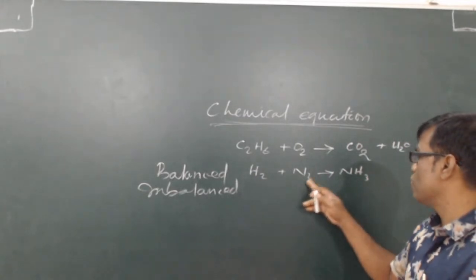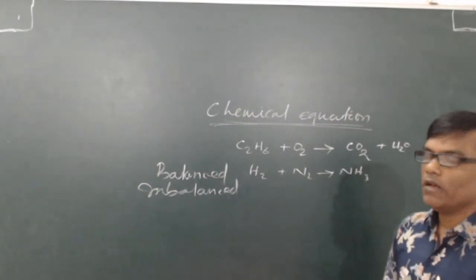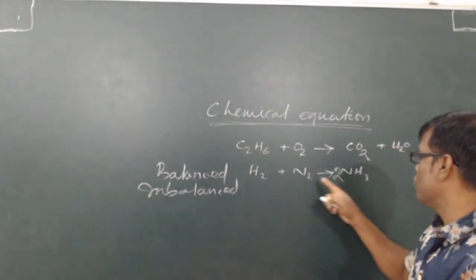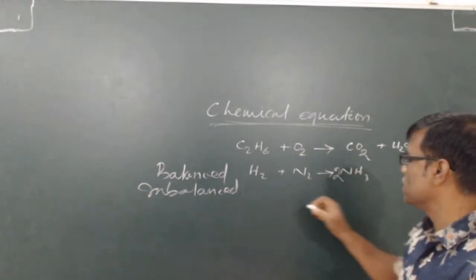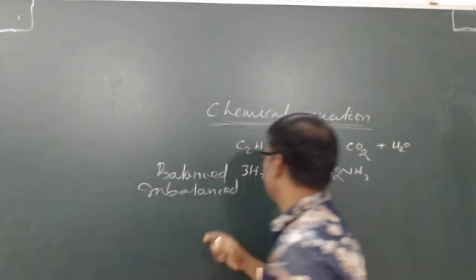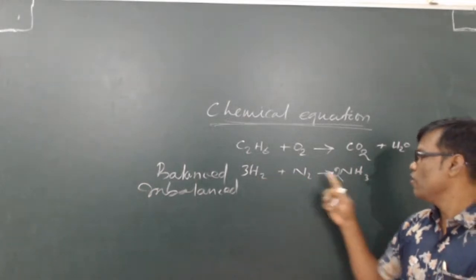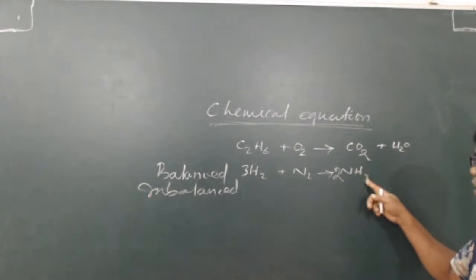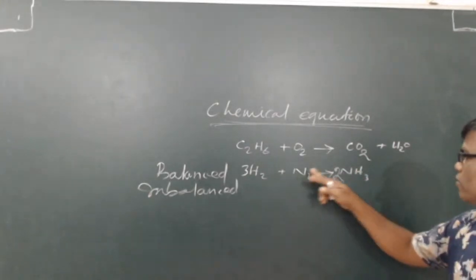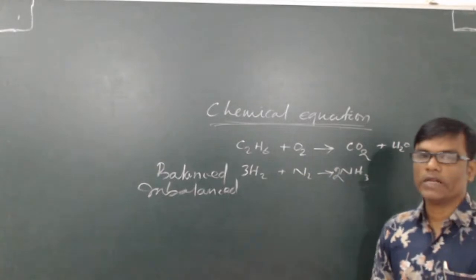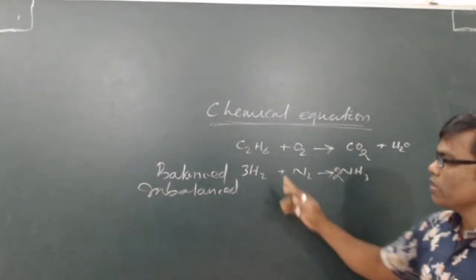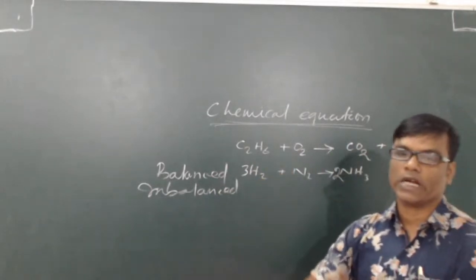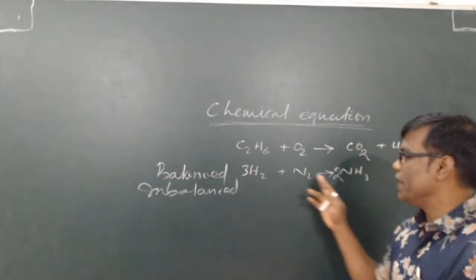For example, H2 plus N2 gives NH3. If you put 2 before NH3, then nitrogen becomes the same: 2 and 2. And hydrogen is six. If you balance here with 3H2, then 3H2 means six hydrogen. Two ammonia means six hydrogen, two nitrogen equals two nitrogen. So it is a balanced chemical equation.